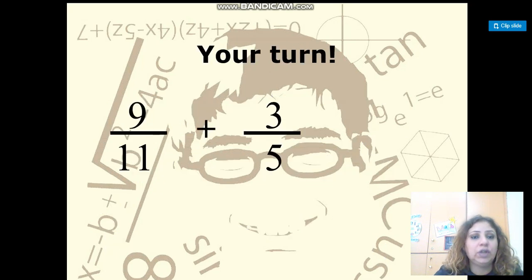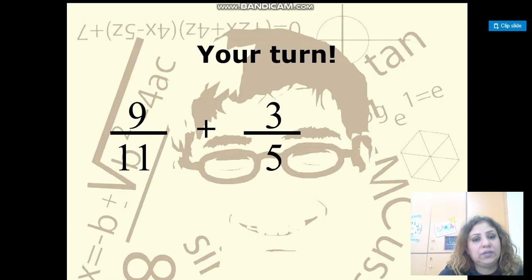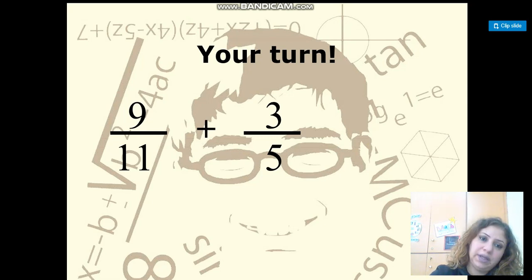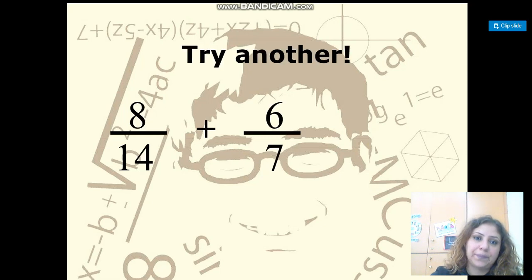Now it's your turn. Copy them to your copybook and start working. Try this one — don't forget to list the multiples of 11 and 5 and find the common multiple to change the denominator to the common denominator.